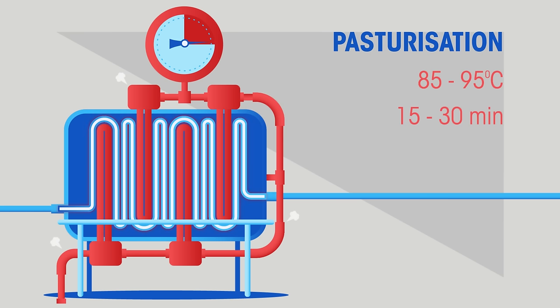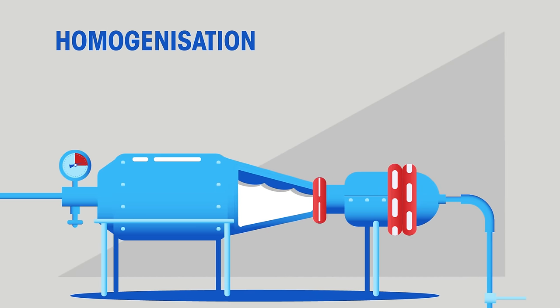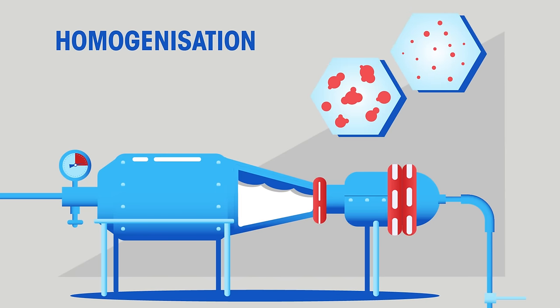The milk is then homogenized. This breaks down the fat droplets in milk to make them smaller so that they stay suspended in the yogurt rather than sinking and making it all lumpy.